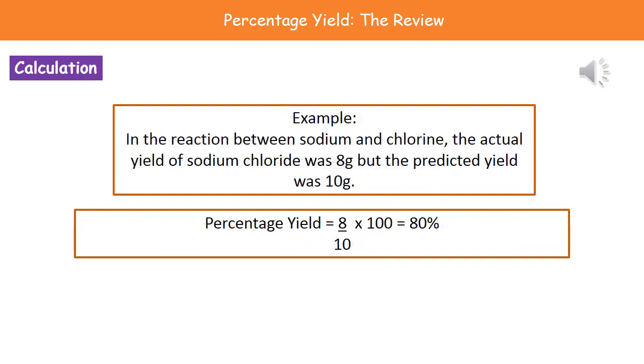So here we've got an example of the kind of question that might come up. In the reaction between sodium and chlorine, the actual yield of sodium chloride was 8 grams but the predicted yield was 10 grams. So in the question we have the two pieces of information we need. Because our actual yield is 8 and our predicted is 10, the calculation we have to do is 8 divided by 10, then we times that by 100 to get our answer as a percentage, and the answer to that one is 80%.